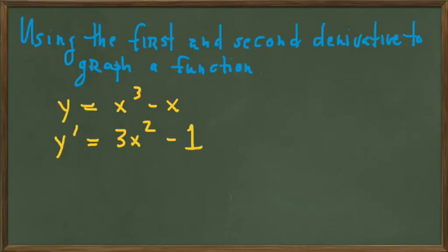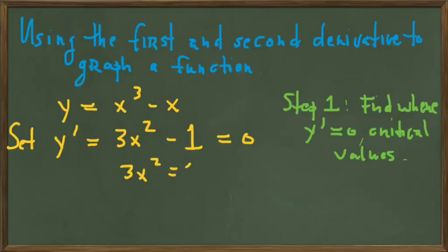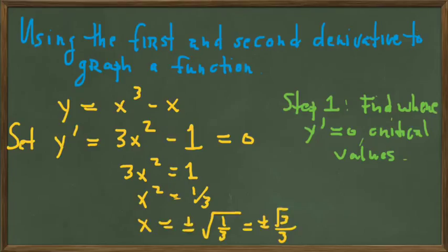After we take the first derivative of a function, our second step will be to set that first derivative equal to 0. That will identify what we call the critical values — those x values where this occurs. We don't need any sophisticated algebra. We just move the 1 over, divide through by 3, and take the square root of both sides to get the two critical values: x equals plus or minus the square root of 3 over 3.